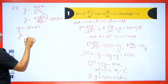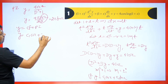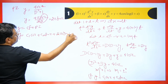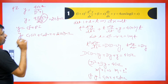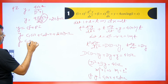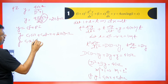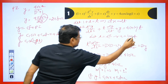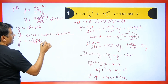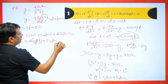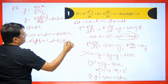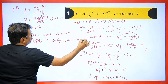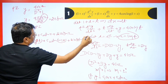Now wherever it is z, we substitute log t. So it becomes c₁ cos(log t) + c₂ sin(log t) + 2 log(t) · sin(log t). Then in place of t, we substitute 1 + x. So y = c₁ cos(log(1+x)) + c₂ sin(log(1+x)) + 2 log(1+x) · sin(log(1+x)). This is the final answer.